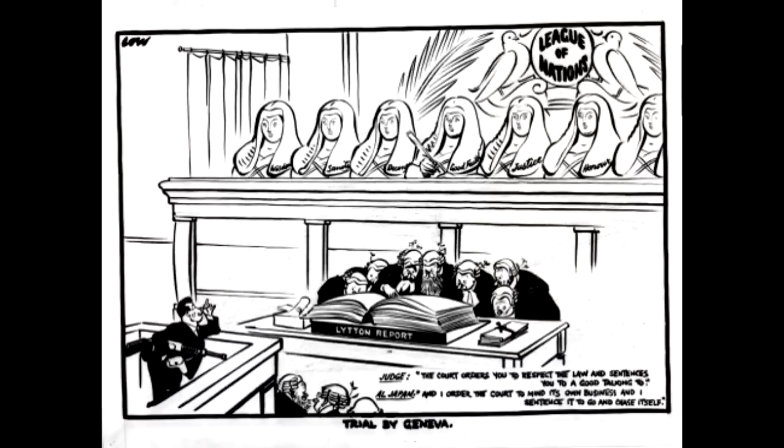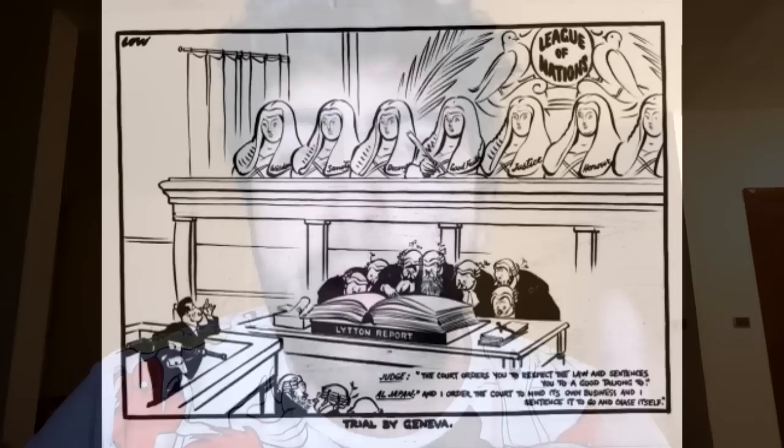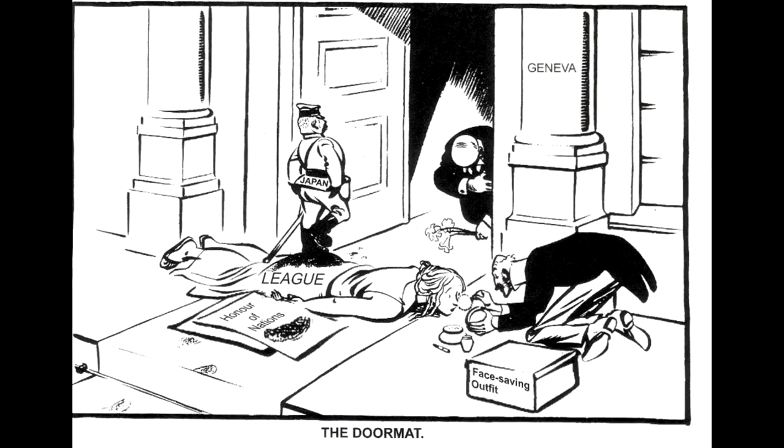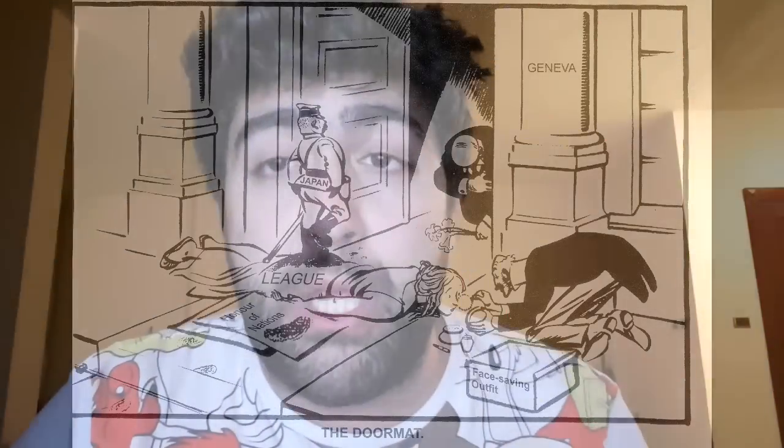The League of Nations failed to act for several reasons: it had no army; Britain and France didn't see the occupation as threatening their interests; they also viewed China as drifting toward communism, seeing Japan's move as potentially useful; and the Great Depression had left most European nations focused purely on economic recovery. So Japan continued increasing its hold over China.